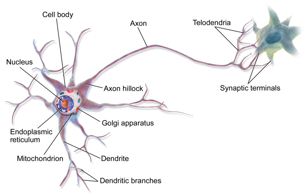Afferent neurons convey information from tissues and organs into the central nervous system and are also called sensory neurons. Efferent neurons transmit signals from the central nervous system to the effector cells. Interneurons connect neurons within specific regions of the central nervous system. Afferent and efferent also refer generally to neurons that, respectively, bring information to or send information from the brain.